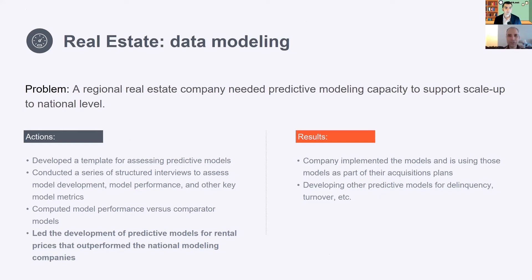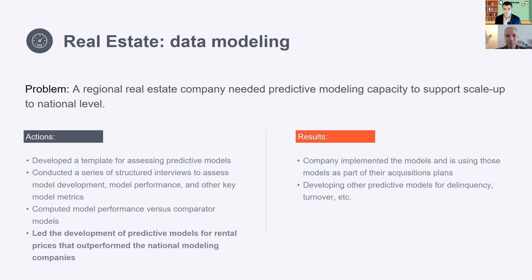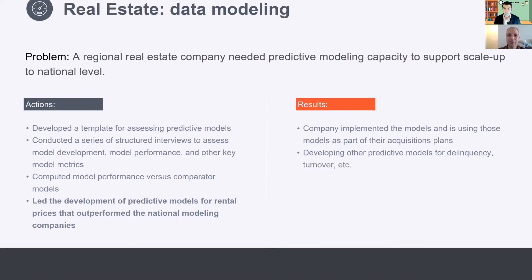I've got a client right now who is scaling up real estate at a national level and they need to predict how much rent they can charge for apartments. If the prediction model isn't accurate, they don't know if they should buy the apartment — it might be a bad investment. What data variables can I use? What can I scrape off the web? What do I know from the literature is already important? What model structure should I use — regression, random forest, GBM, clustering, segmented populations? The answer is it's data science: let's check it out and figure it out.